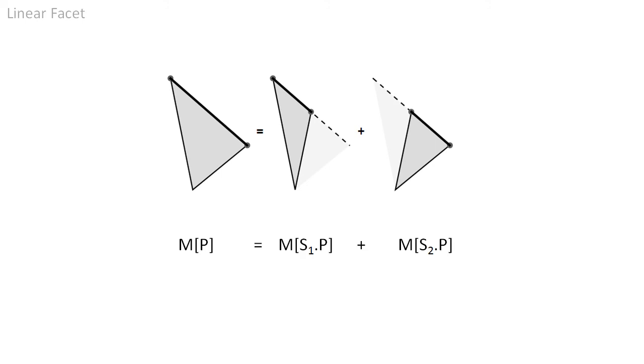We symbolize this requirement by the following equation. M represents the operator that computes the moment based on the points P that span the cone. S1 and S2 are the split operators.